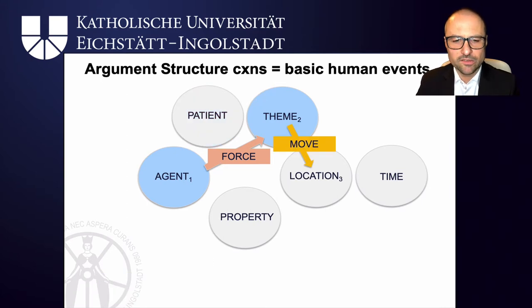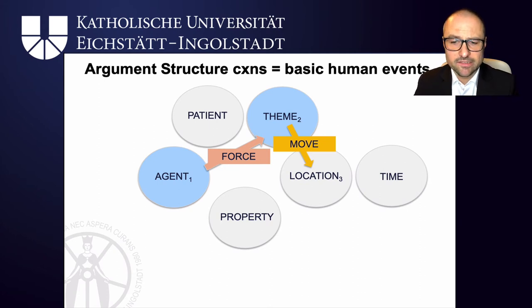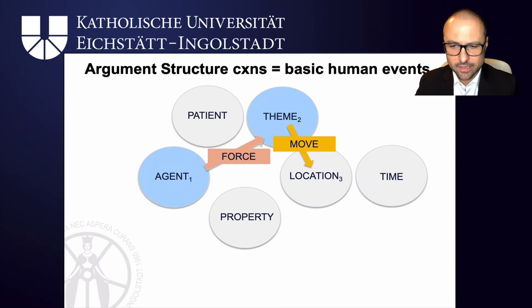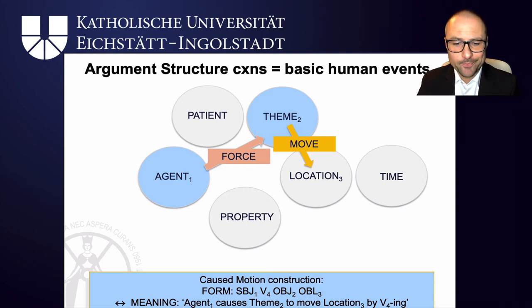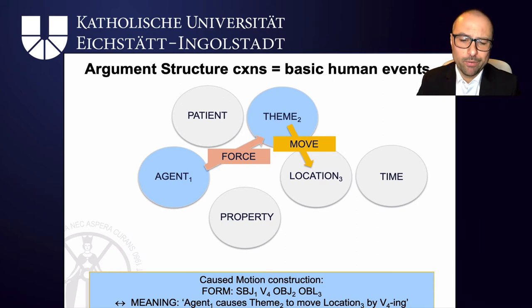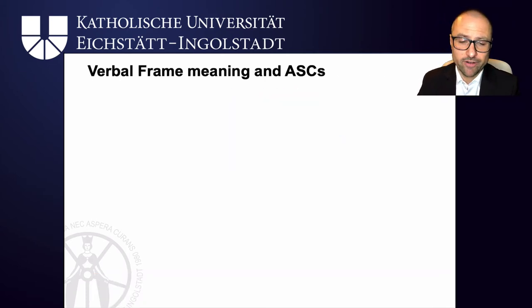Finally, sometimes an agent puts force onto a theme which doesn't really change state but changes its location — the theme then moves. These are situations like he put the books on the shelves, she swept the slippers under the table, they loaded the boxes onto the truck. Here the agent puts force onto the boxes and they end up in a certain location. So we have subject, verb, object, and oblique, where the subject specifies an agent that causes a theme to move to a location by the verbal action. As you may remember from our session on frame semantics, the verbal frame and verbal meaning closely interact with argument structure constructions.